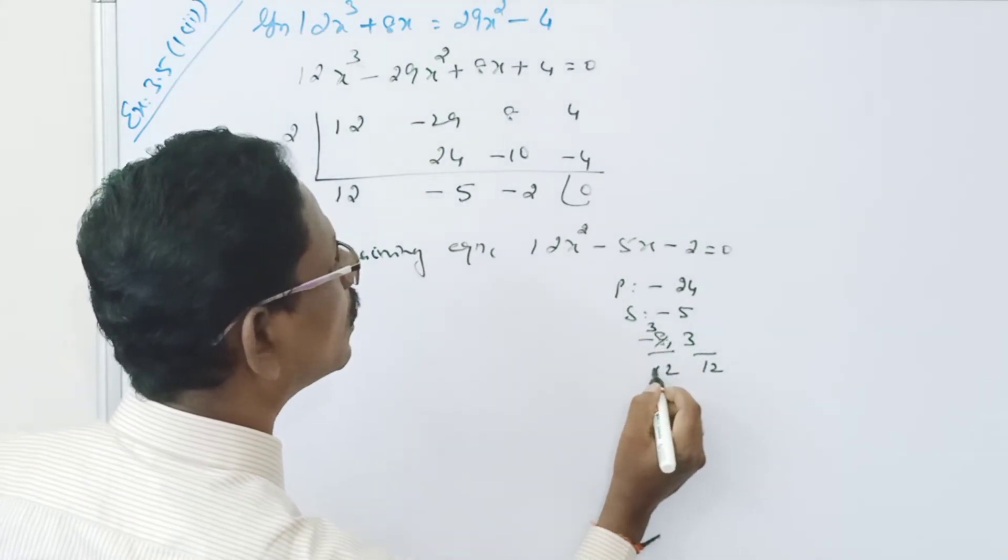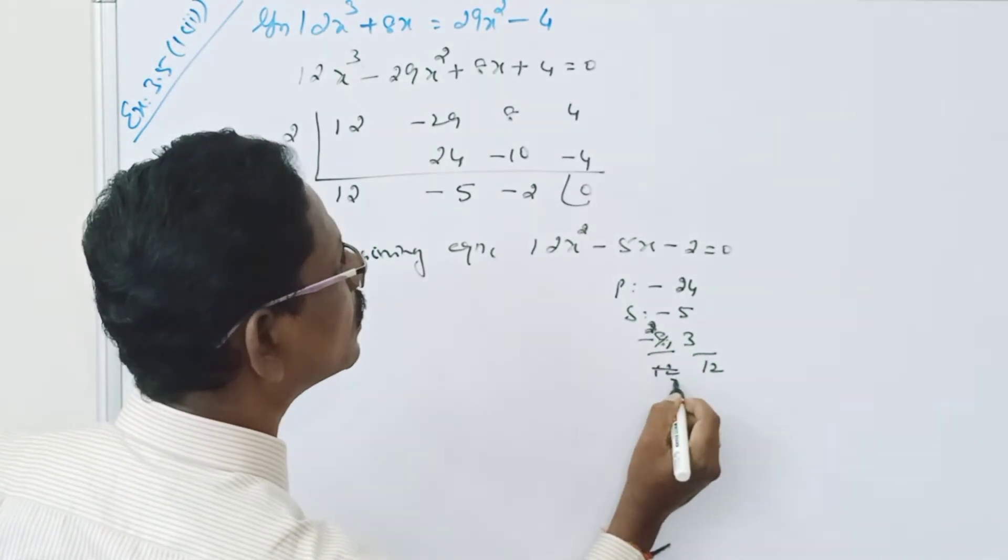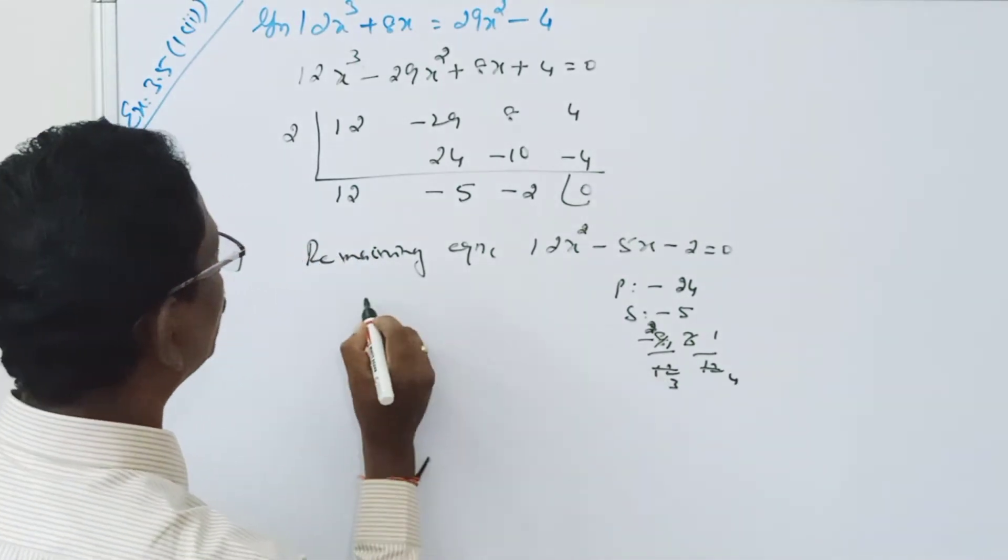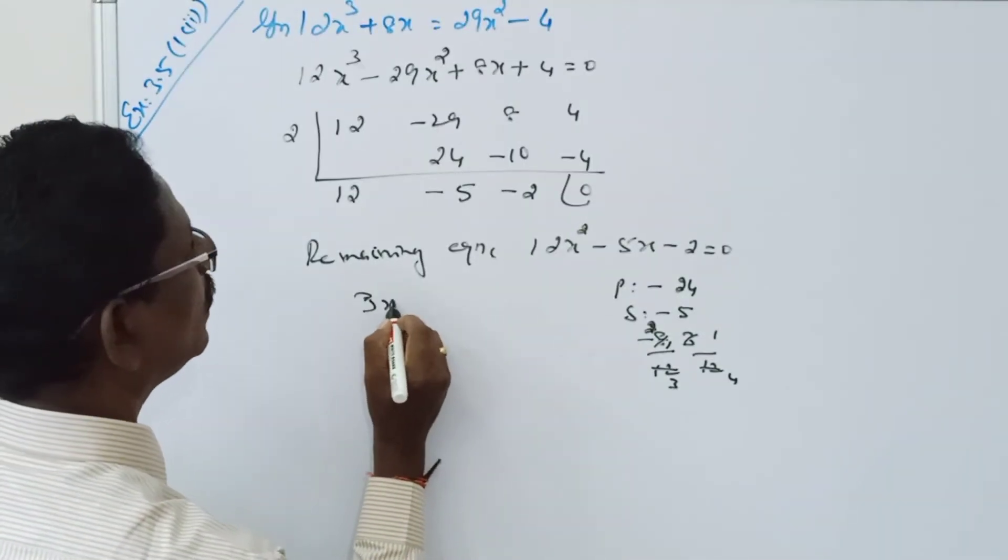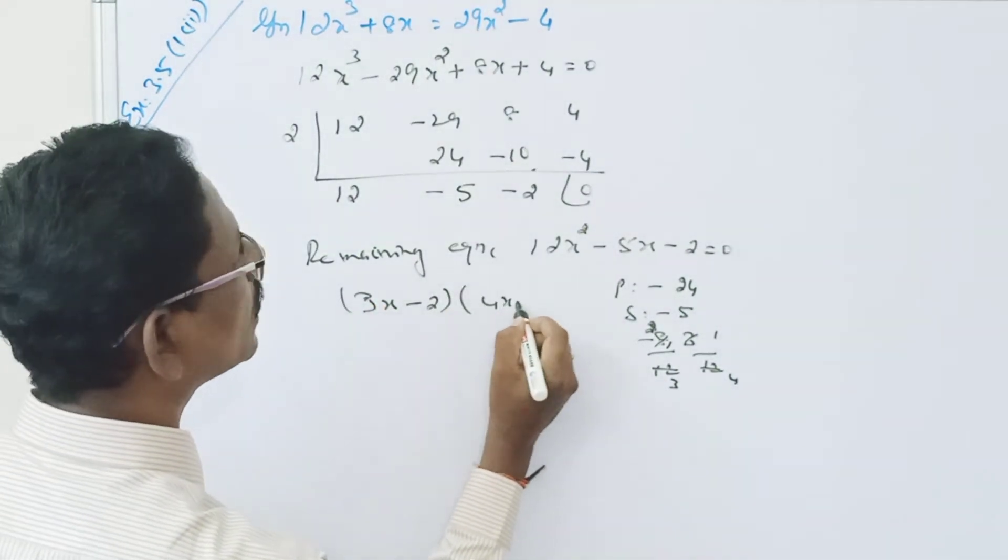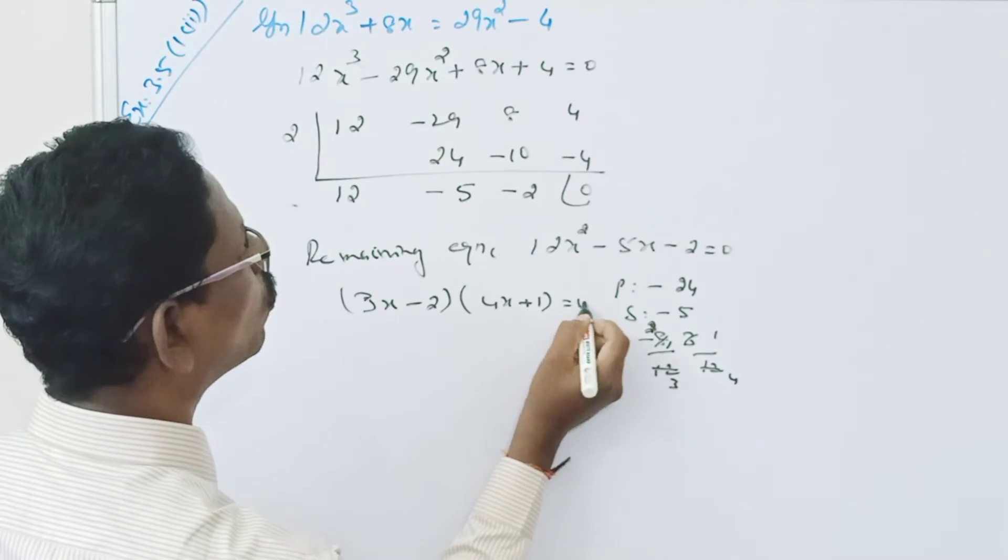2 fours, 3 fours... 1 three is 3, 4 threes... So what we have? 3x minus 2 into 4x plus 1 equal to 0.